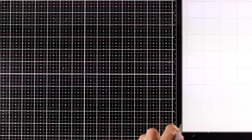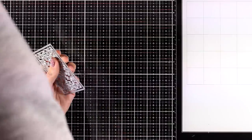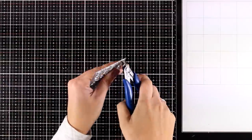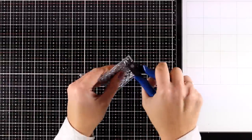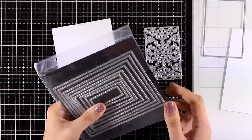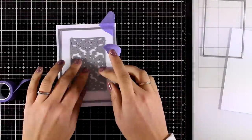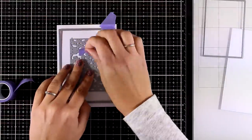This is the snowflake window die set and it comes with two dies, the one that gives you the snowflake design and another one that cuts out all around it. I am going to use only the snowflake design for today and I will also use one of my rectangle dies that give that stitching that I showed you earlier.